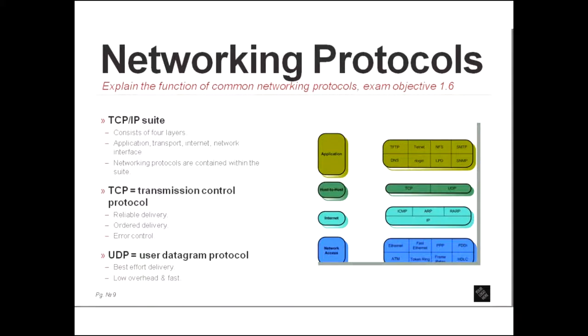So the first thing that we need to talk about is the TCP IP Suite. And what is that? Well, it consists of four layers: the application layer, the host-to-host layer, the internet layer, and the network access layer. Now if you're familiar with the OSI model, which uses seven layers, the TCP IP Suite is a little bit different. The OSI model layers one and two correspond to the network access layer. Layer three, which is the network layer in the OSI model, is the internet layer in the TCP IP Suite.